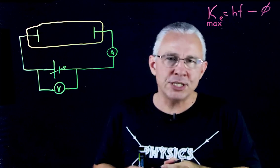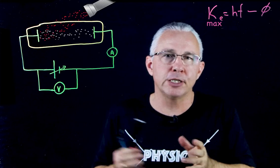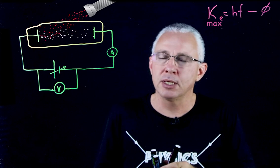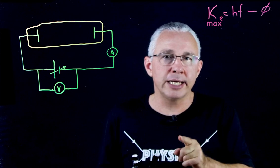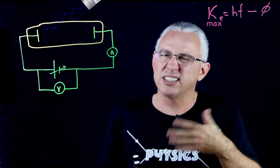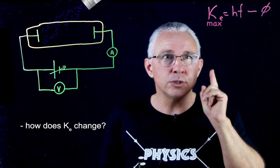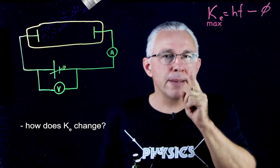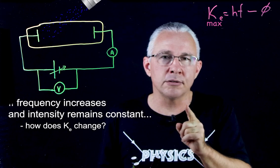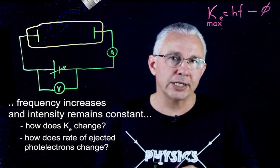Now imagine I apply a red light to this situation and I liberate photoelectrons as a result. I'm going to ask the question here. If I change the red light to a blue light, in other words a higher frequency: A, what happens to the kinetic energy of my photoelectrons, and B, if I maintain the intensity of the light, what will happen to the rate of the photoelectrons emitted?